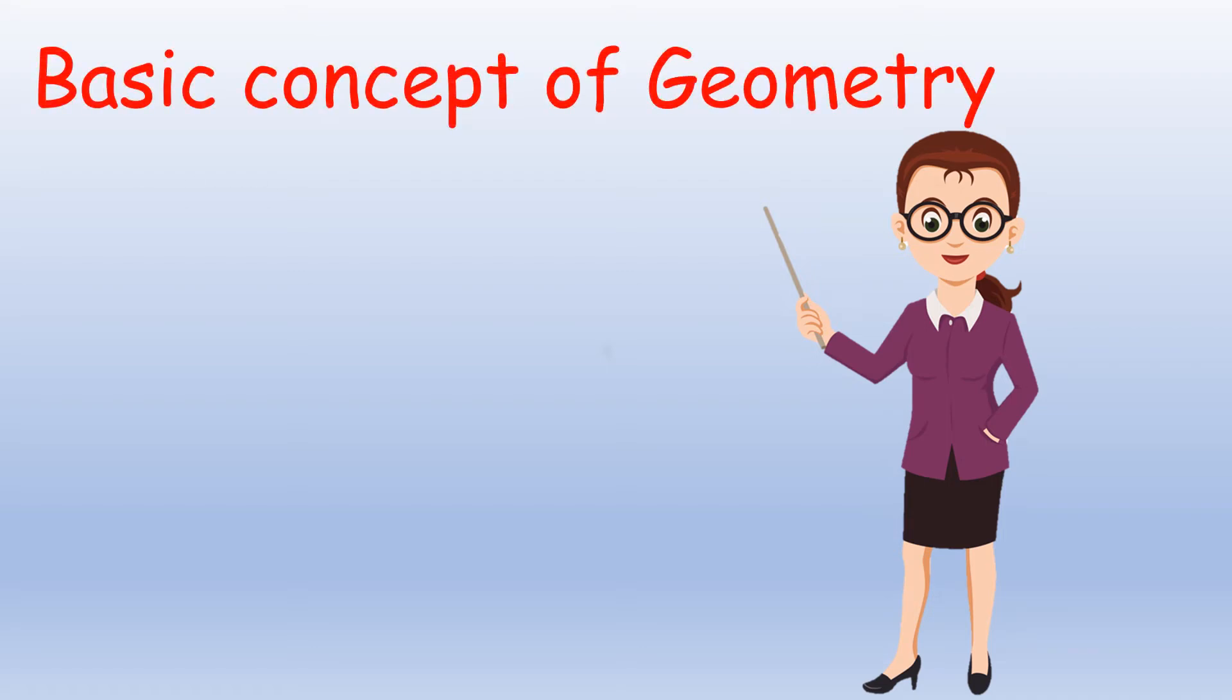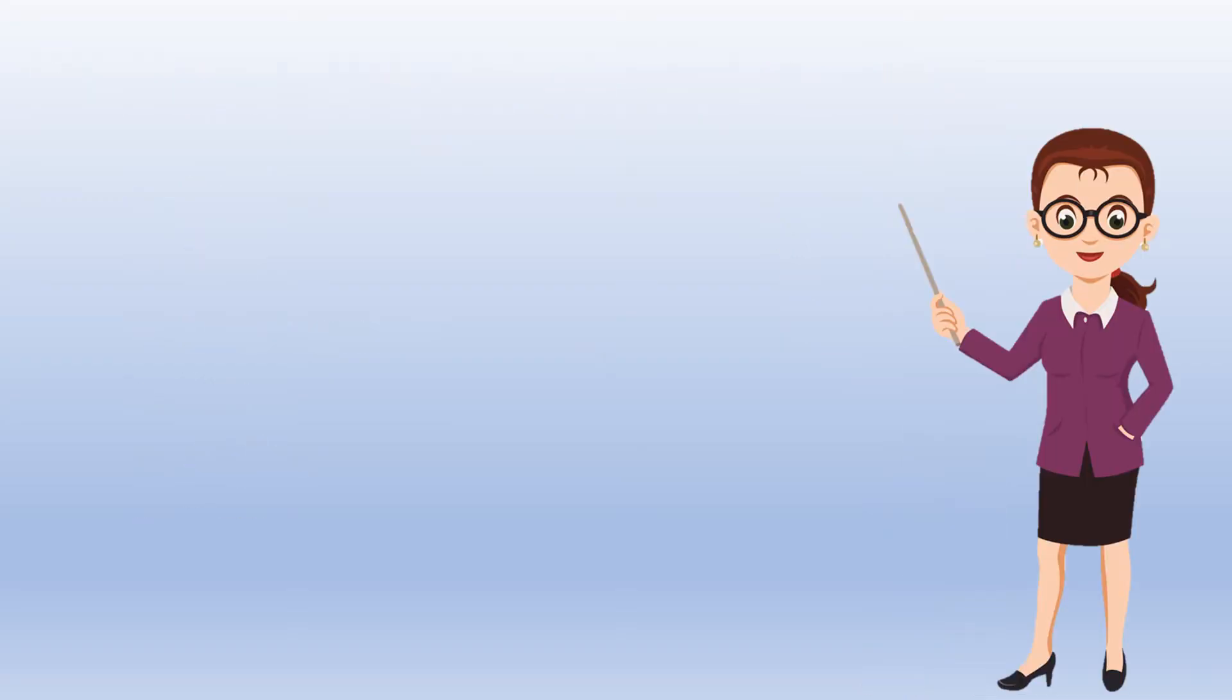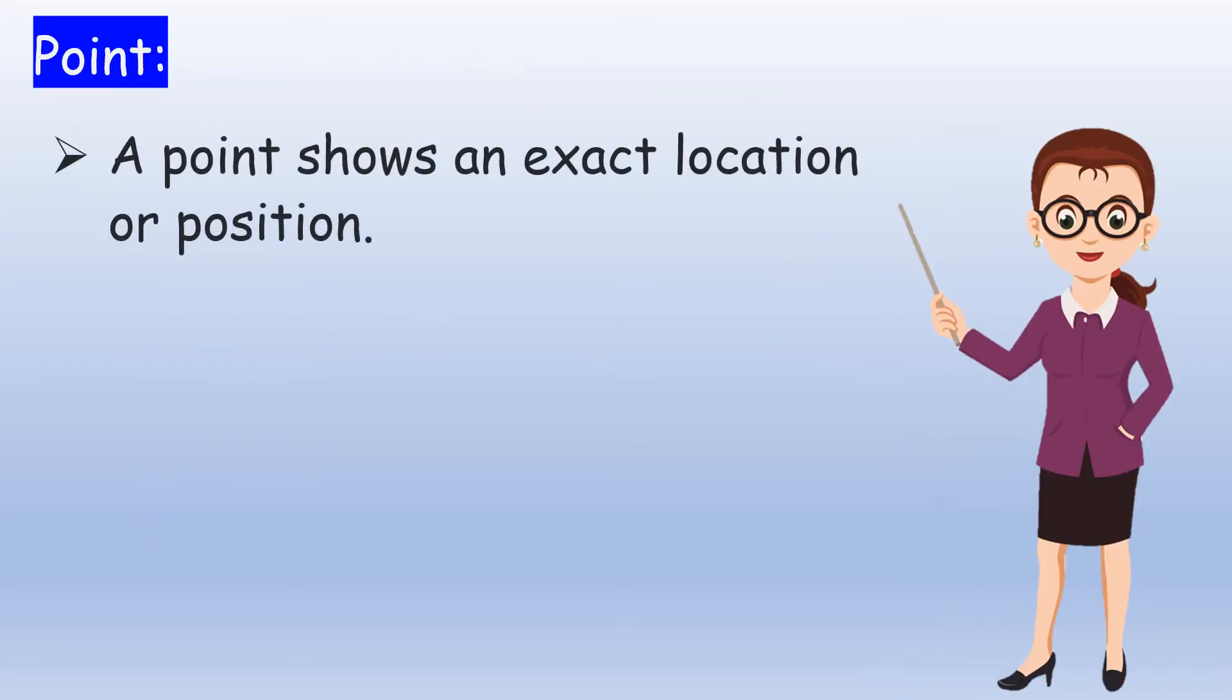Basic Concepts of Geometry. Point. A point shows an exact location or position. It is represented by a small dot. It is denoted by a capital letter and it is read as point A.